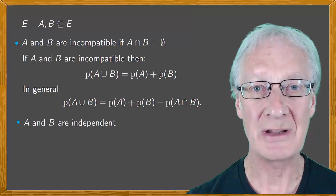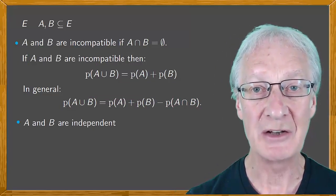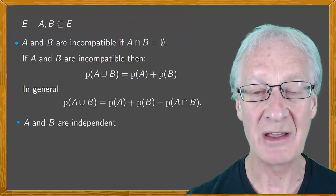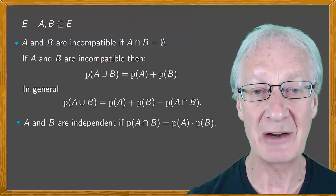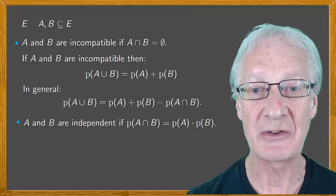If two events A and B are independent, this means that the occurrence of A doesn't influence the occurrence of B, and vice versa. Actually, the definition of independent events is that the probability of their intersection is the product of the probabilities.